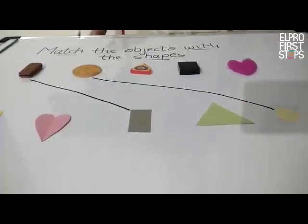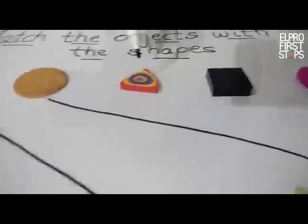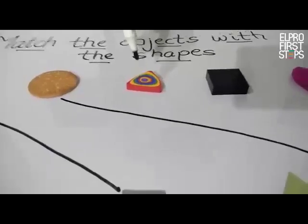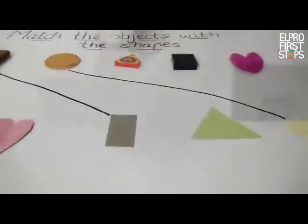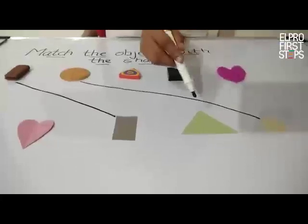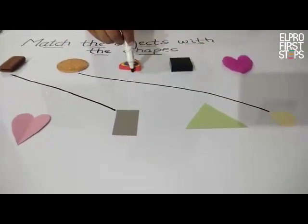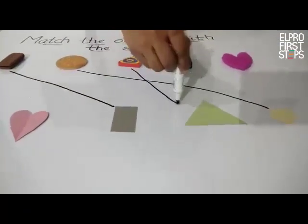Next I have an eraser. What shape is this? Yes, it's a triangle. Let's look for a triangle in the second line. There it is. Okay. There goes a line from the eraser to the triangle.